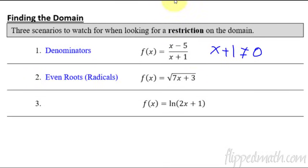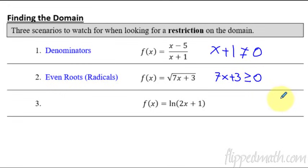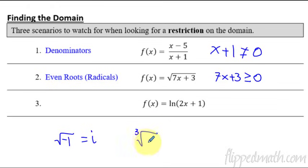The next restriction is even roots or radicals. When you have a square root, the square root is not allowed to be negative. So whatever is underneath the radical — say 7x plus 3 — must be greater than or equal to zero. That's allowed to be zero, but you can't take the square root of negative one because that gives you an imaginary number. However, you could do the cube root of negative one — that's allowed. Third roots, fifth roots, seventh roots have no restriction. Just the even roots have restrictions.